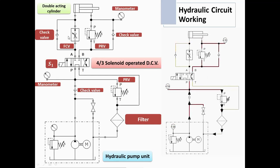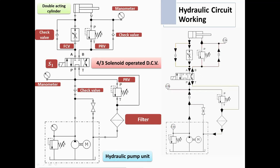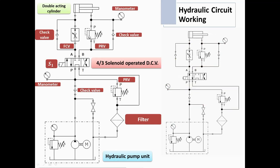This is the flow control valve with the integral check valve. This is the double acting cylinder — as the fluid is admitted on both sides of the piston, it is known as the double acting cylinder. This is the pressure gauge or manometer indicating the pressure in the return side of the circuit. This is the pressure relief valve and this is the check valve.